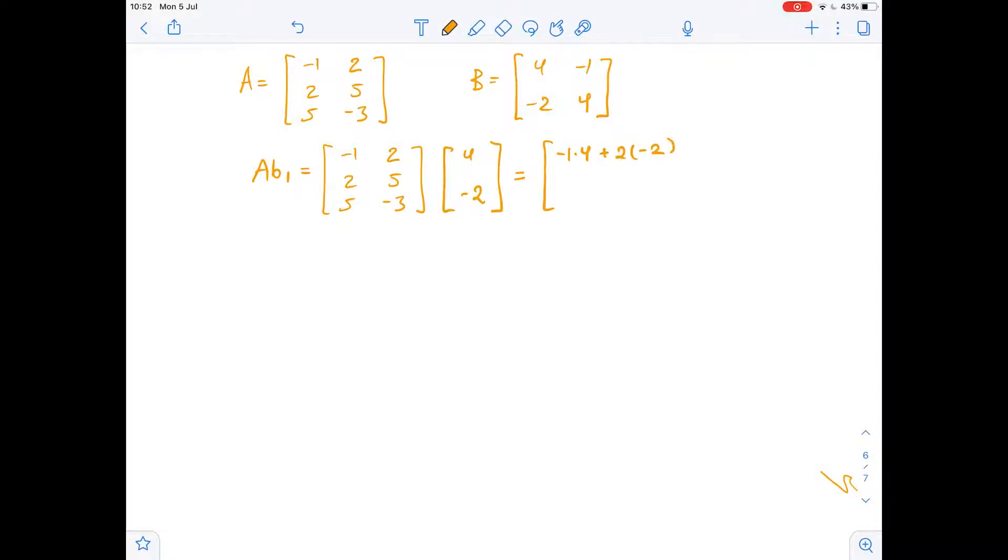So AB1 equals negative 1 times 4 plus 2 times negative 2, then 2 times 4 plus 5 times negative 2, and 5 times 4 plus negative 3 times negative 2.